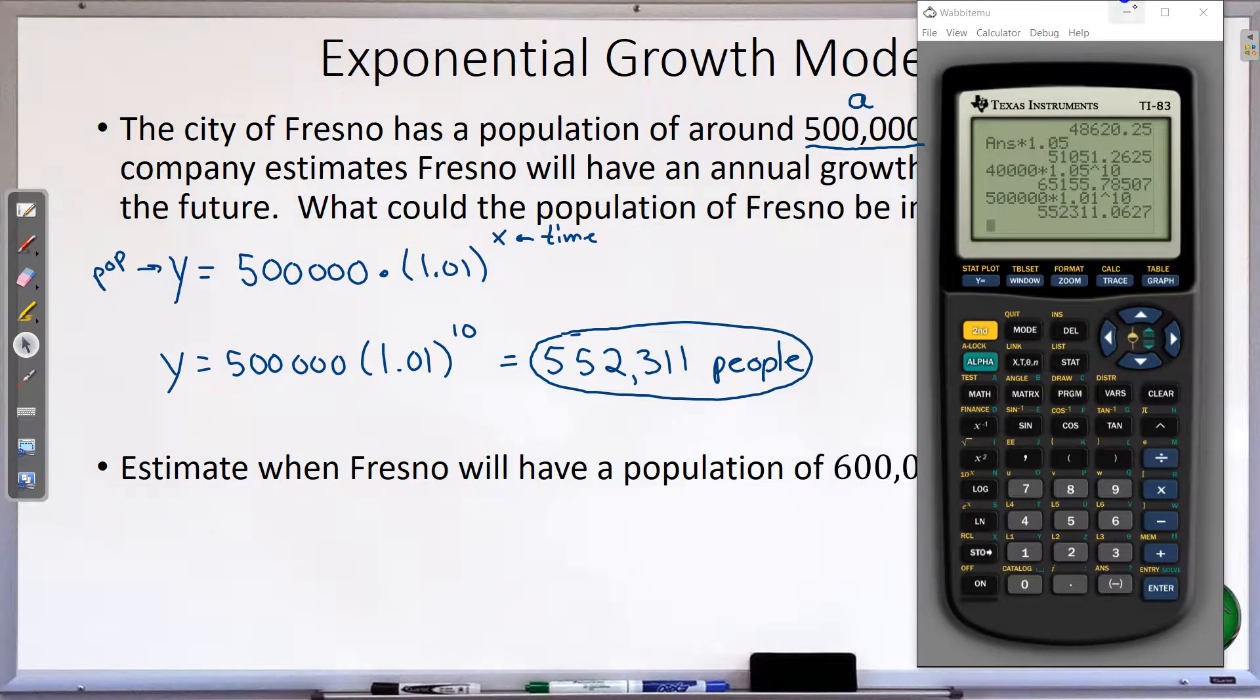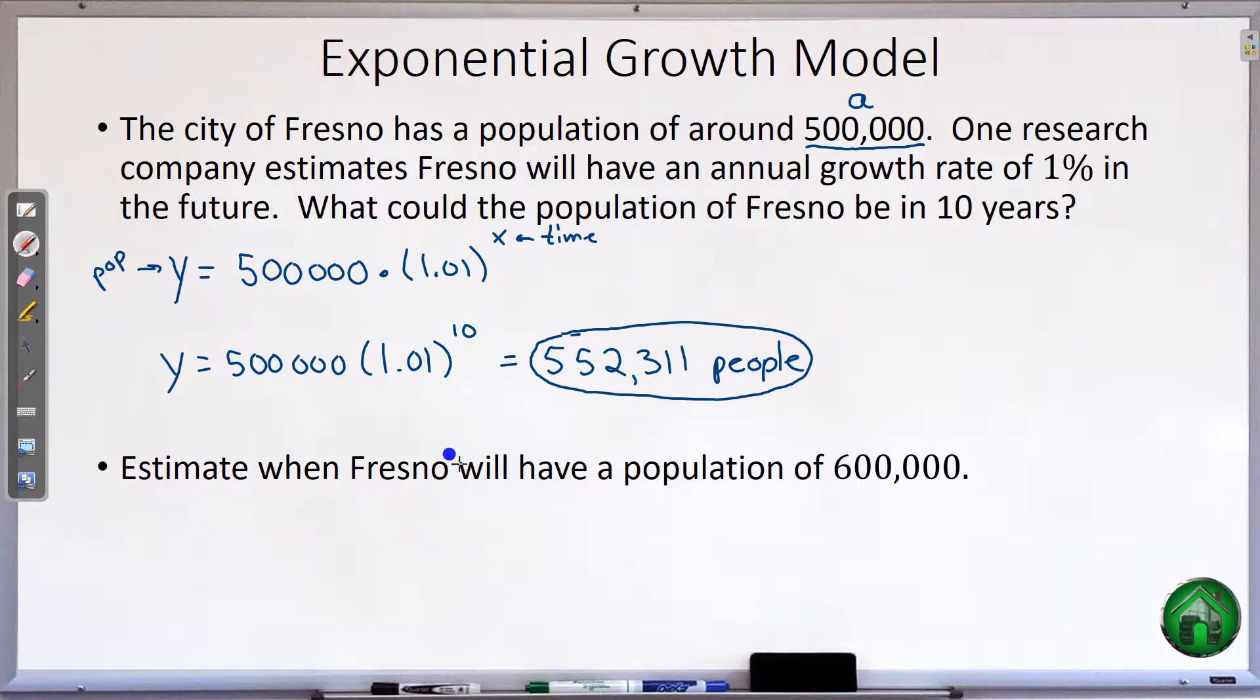Now one more interesting question for this. Estimate when Fresno will have a population of 600,000. So this right here is a y value. So that number, 600,000, is going to go in for y, not for x, because x is time and y is population. So that will be 600,000 equals 500,000 times 1.01 to the x. Now, here's the thing. We want to solve for x. We can't do that yet. That's coming in a couple of videos. It will take a little while before we have enough skills to get x by itself.